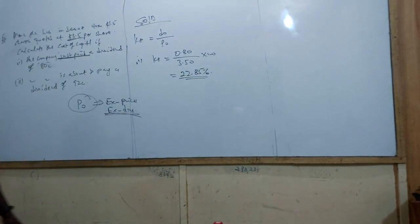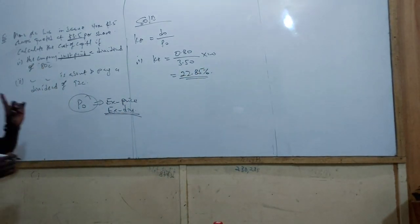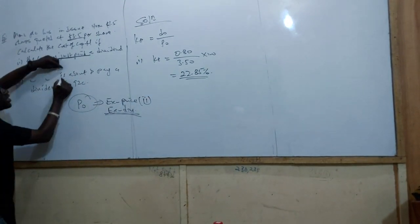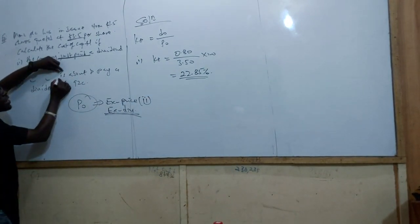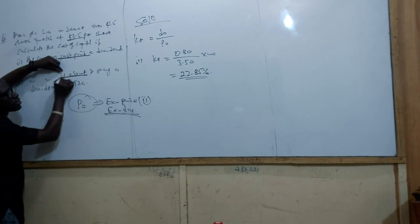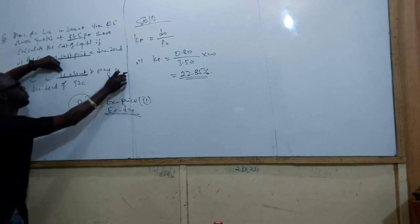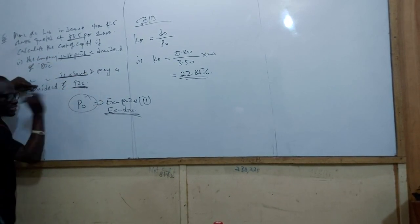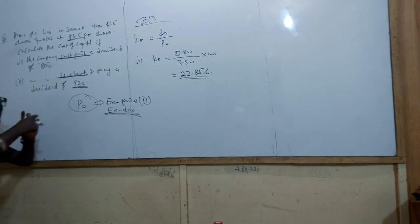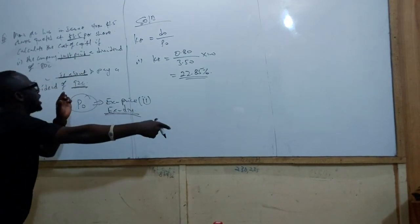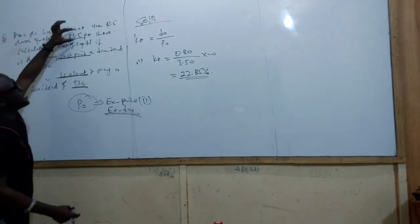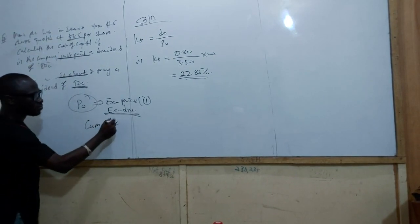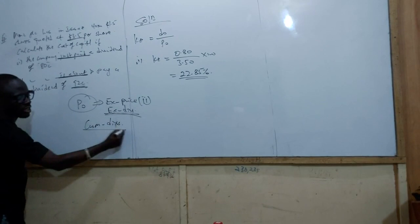For part (B), the key word is that the company is 'about to pay' a dividend of 92 cents. Listen carefully — if the company is about to pay a dividend, then this $3.5 is a cum-dividend price. It means if you buy the shares right now, you will be receiving this dividend.